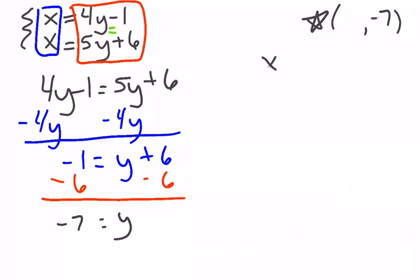I like the first one again. So x equals 4y minus 1. x equals 4 times negative 7 minus 1.